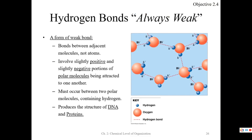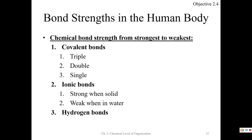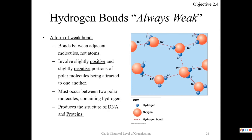I hope that made sense. Understanding polar versus nonpolar covalent bonds is very important — it determines how certain drugs work in the blood, which is very relevant to pharmacology. In terms of bond strength in the body: covalent is the strongest (triple > double > single), followed by ionic bonds (strong when solid but weak when wet in our two-thirds water body), and hydrogen bonds are always the weakest.